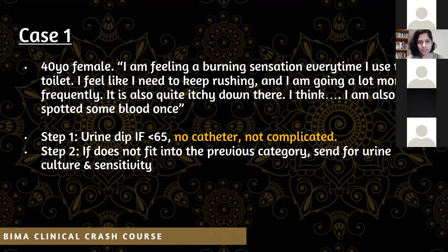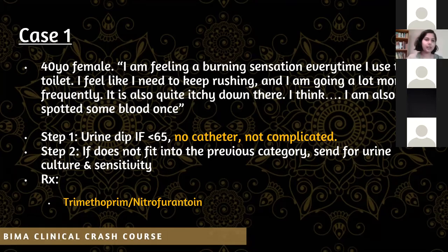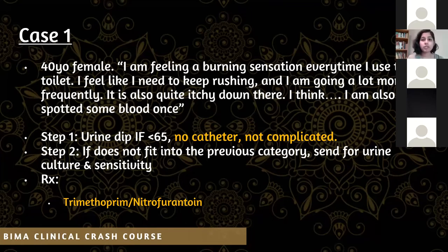Management for an uncomplicated UTI is trimethoprim or nitrofurantoin — the choice depends on trust guidelines. In Northampton General we opt for nitrofurantoin, with a three-day course. If that fails, try the other; if that also fails, there's a third-line broader antibiotic. Symptoms of uncomplicated UTI include dysuria, increased frequency, itchiness, and possibly some blood. Just do a urine dip, and if it's positive for nitrites — bacterial presentation — treat as UTI.